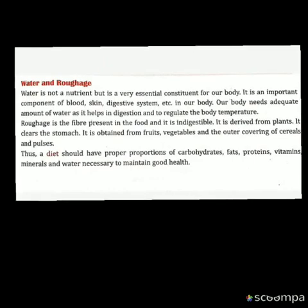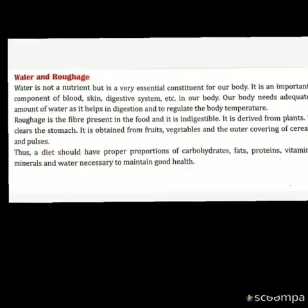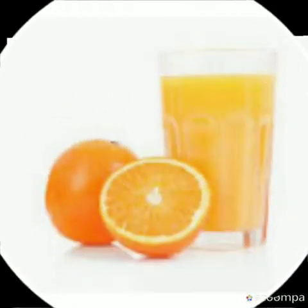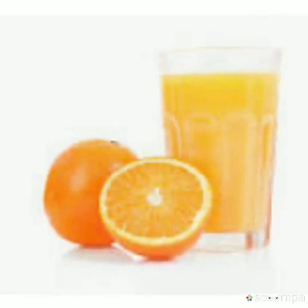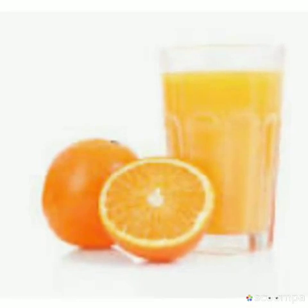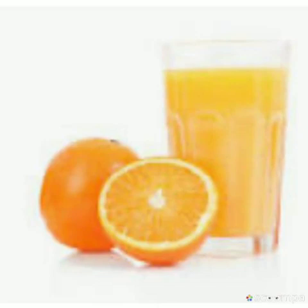The next one is roughage. Roughage is also a nutrient. What is roughage? Roughage means the fiber present in the food. For example, if you are taking one glass of orange juice, that means you are taking only the nutrients of that orange. But if you are eating the orange whole, then along with the nutrients you are also eating the roughage part. So this is the difference between nutrients and roughage.